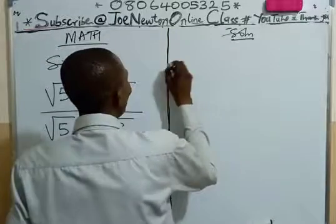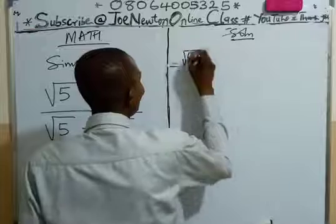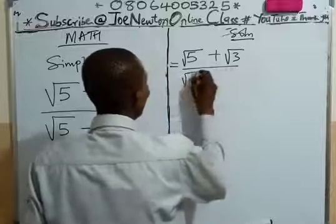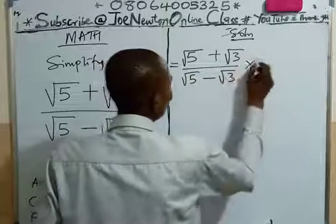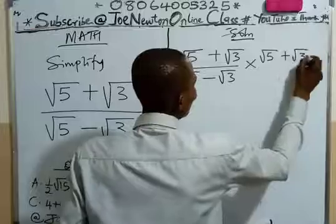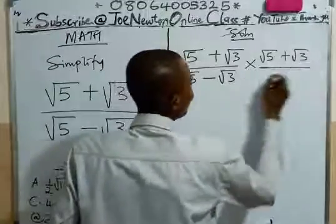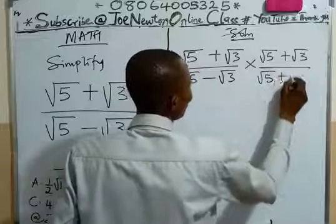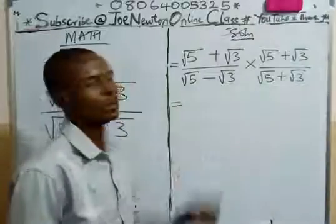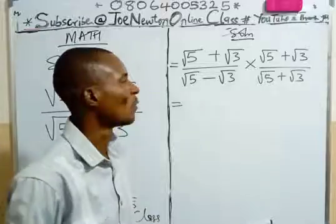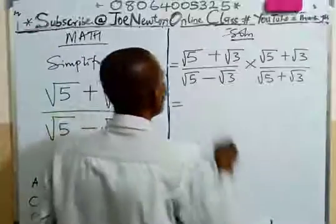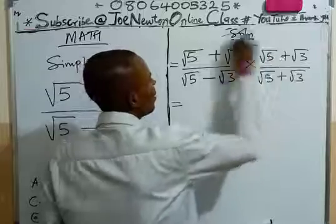So it will now become √5 + √3 over √5 - √3 times √5. Remember what I told you, plus √3. That is the opposite of this minus is plus, all over √5 + √3. Now we have a simple method, but I want to follow the rule to show us how we arrive at every answer in the step.